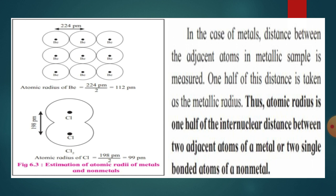For beryllium, the bond length between beryllium and beryllium is 224 pm. This is the distance from one nucleus to another. Divide this value by 2 and you get 112 pm. This is nothing but the atomic radius of beryllium, that is 112 pm.